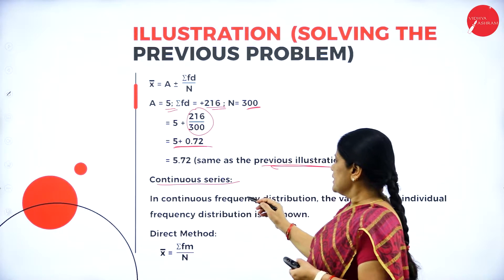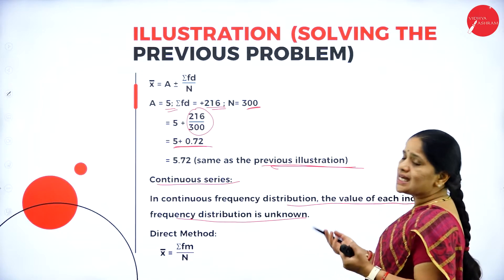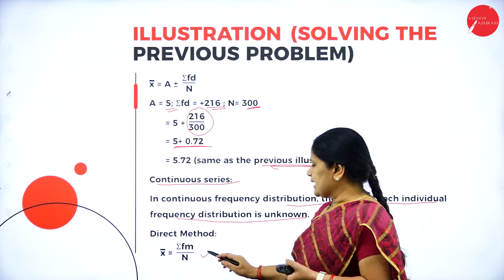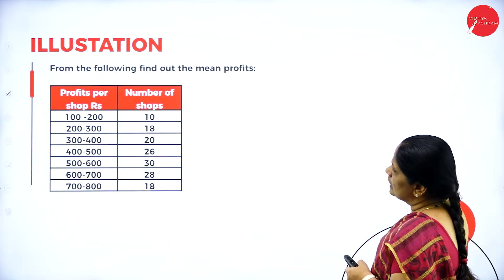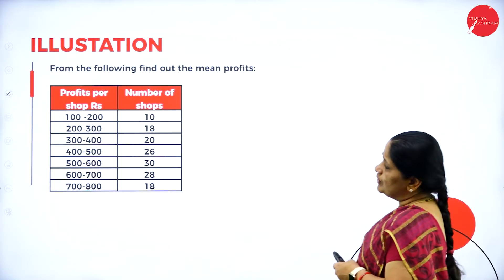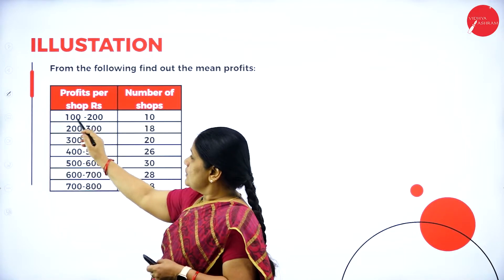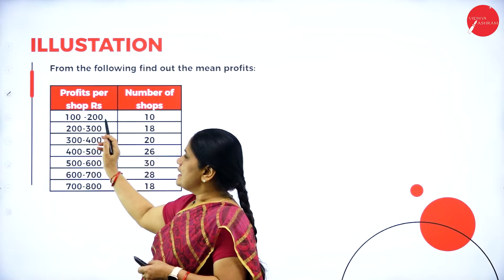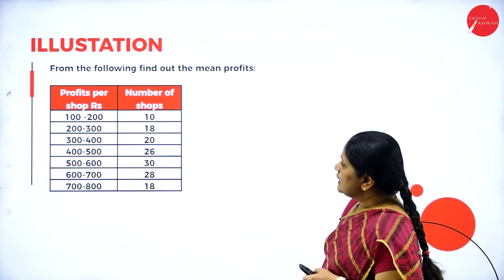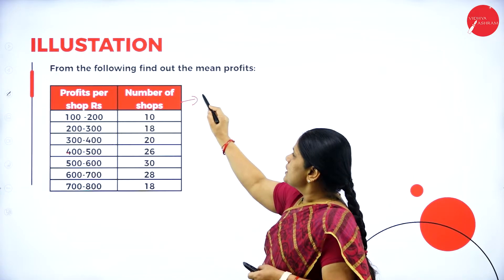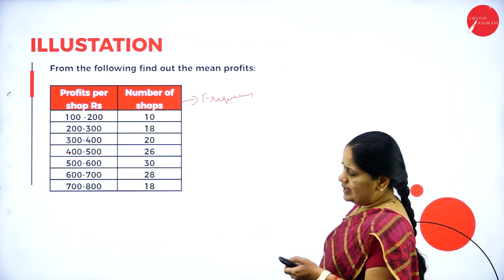Next is the continuous series. In a continuous frequency distribution, the value of each individual item is unknown. The formula is mean = sigma fm divided by n. From the following data, find the mean profits. The data is given in the form of class intervals: 100–200, 200–300, 300–400, up to 700–800, with the number of shops as frequency.